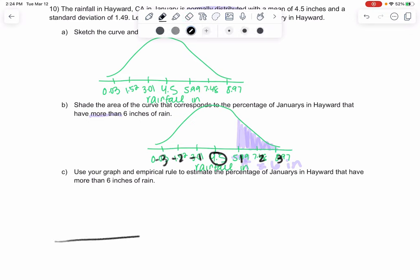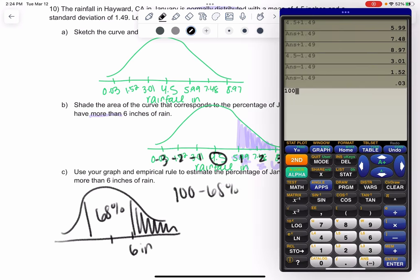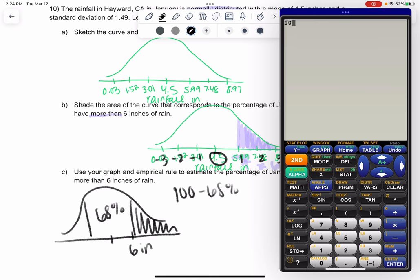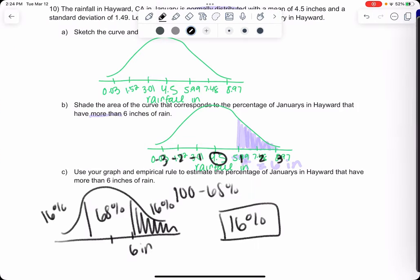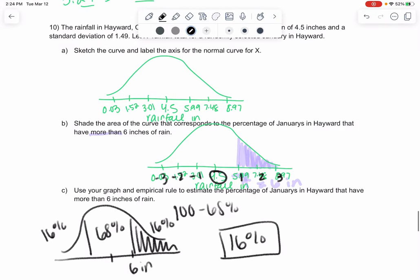It's not quite 68%. We're looking at greater than 6. What we know is in the middle is 68%. To figure out the tails, we can do 100% minus 68, which means there's 32% left over. But there's two tails, so we split it equally. Each side gets 16%. So 16% of the time, Hayward would have rain more than 6 inches. This is a special trick when you land right on those perfect standard deviations. Otherwise, we use z-score.